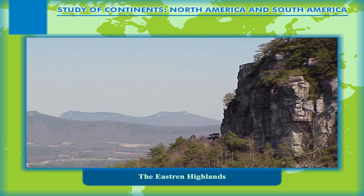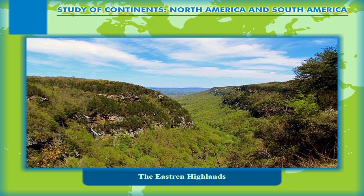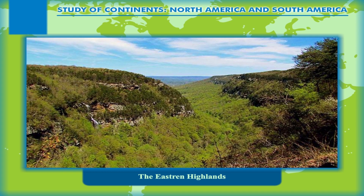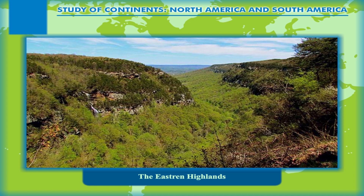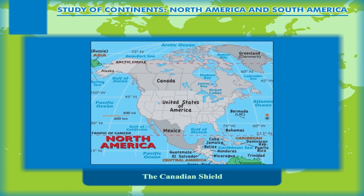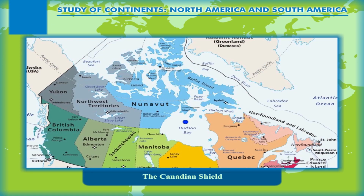On the eastern side of these highlands lies the Piedmont Plateau, which has a steep sloping side that merges with the Atlantic coastal plains. The Appalachians are a region of rich deposits of coal, copper, and lead.